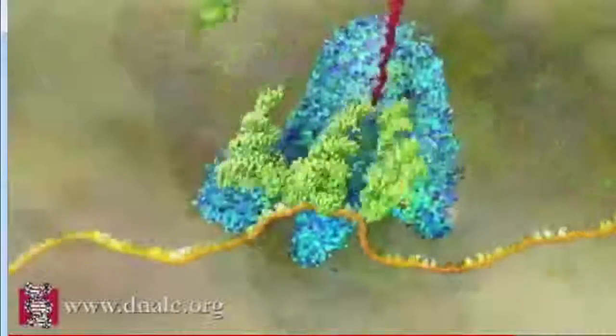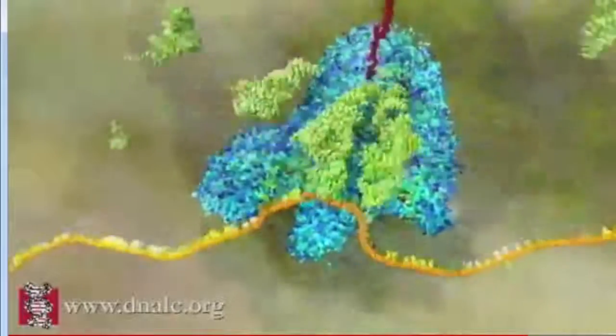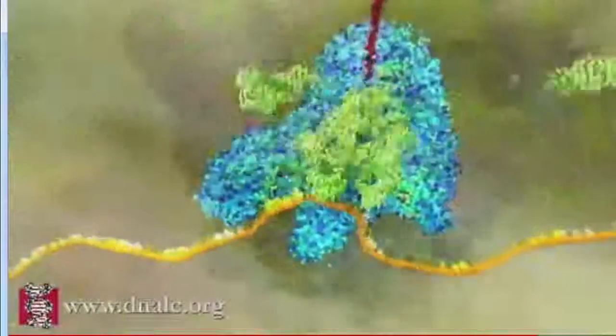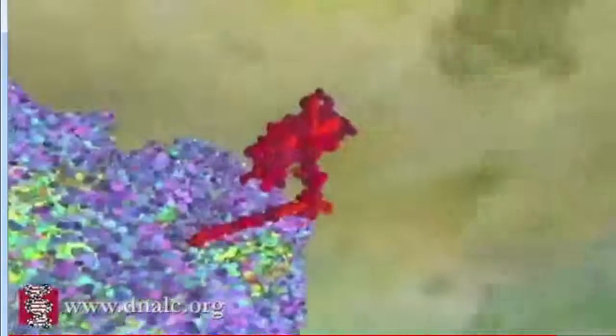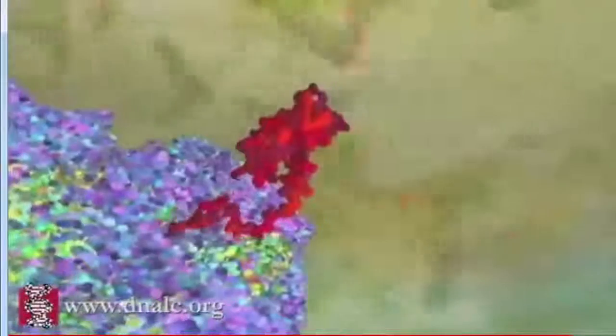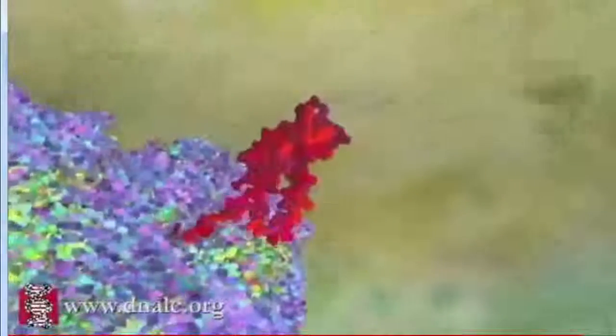In this case, the end product is hemoglobin. The cells in our bone marrow churn out a hundred trillion molecules of it per second. And as a result, our muscles, brain, and all the vital organs in our body receive the oxygen they need.